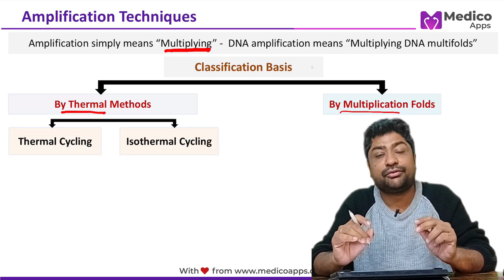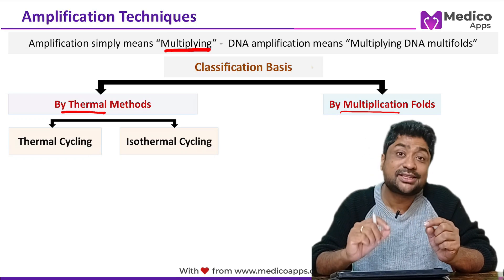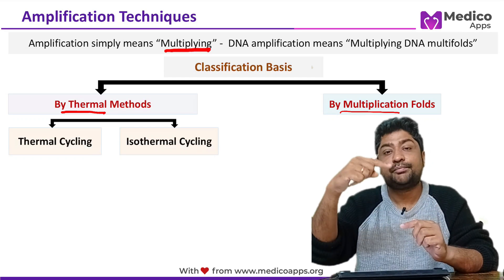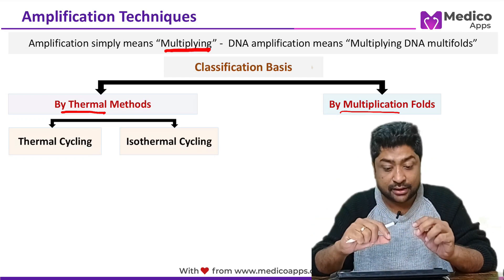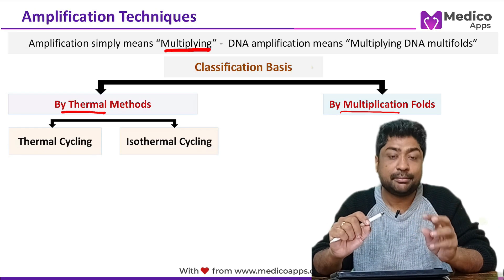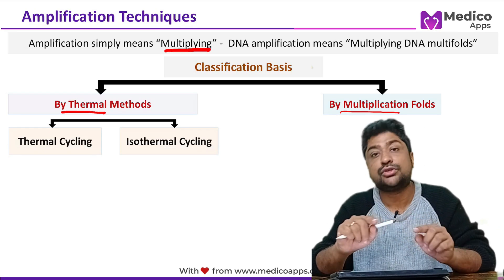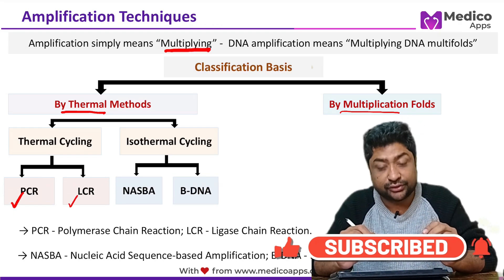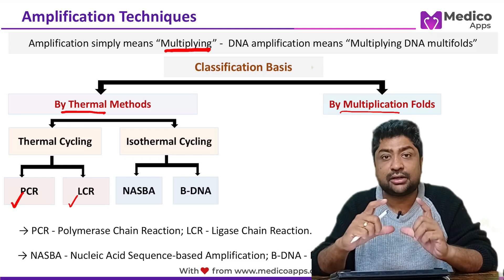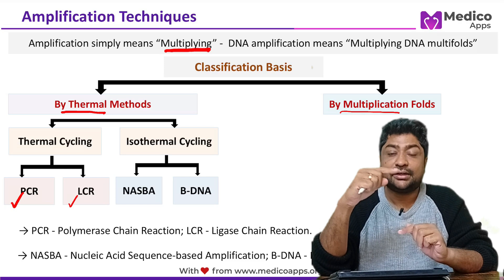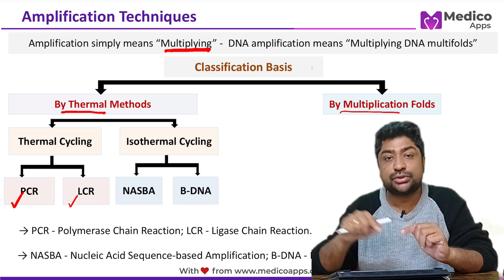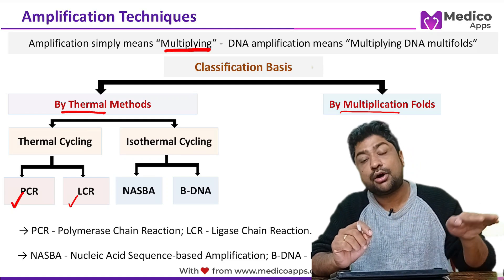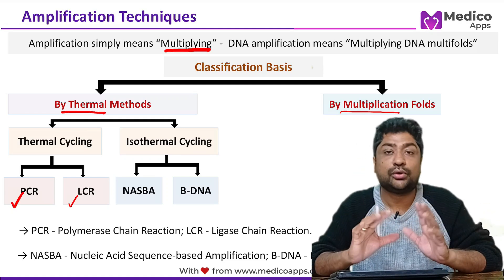When classified by thermal method, there are two types. Thermal cycling methods involve the temperature repeatedly increasing and decreasing in a cyclical manner — PCR is one such method. Isothermal cycling means amplification happens at a constant temperature. So based on thermal method: PCR and ligase chain reaction are thermal cycling methods, while NASBA and BDNA are isothermal methods.